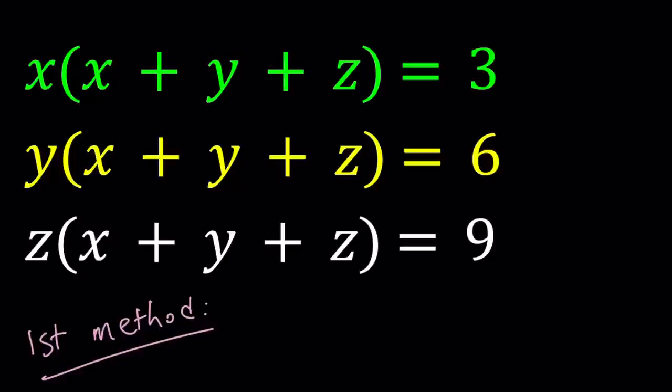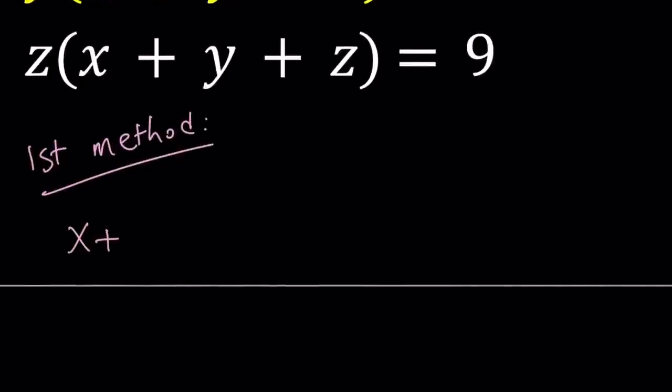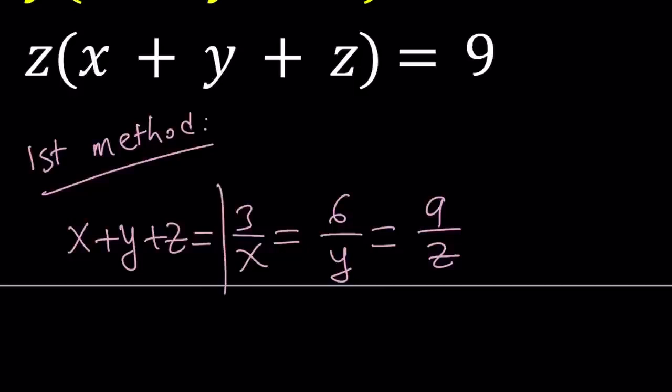So for my first method, I'm going to do something that probably a lot of people thought about. x plus y plus z is repeated, so we can isolate it from all of these equations. So from the first one, x plus y plus z can be written as 3 over x. From the second equation, it can be written as 6 over y. And from the third one, it can be written as 9 over z.